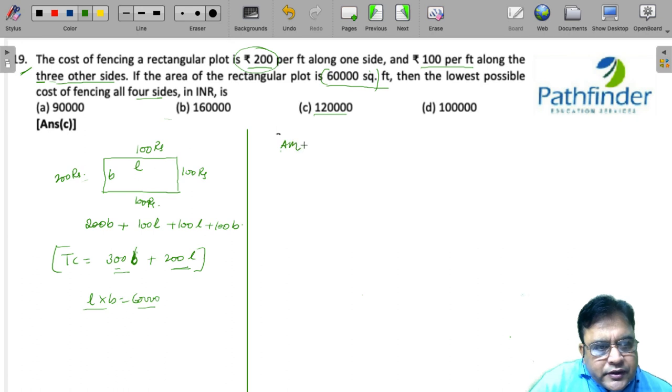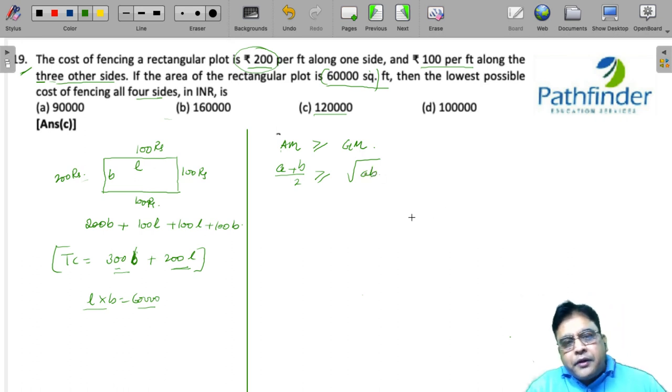In this case, we can also use a property that we have learned, that is arithmetic mean is greater than equal to geometric mean. If there are two numbers A and B, arithmetic mean is A plus B by 2, while geometric mean is the square root of the product of A and B, under root of AB.